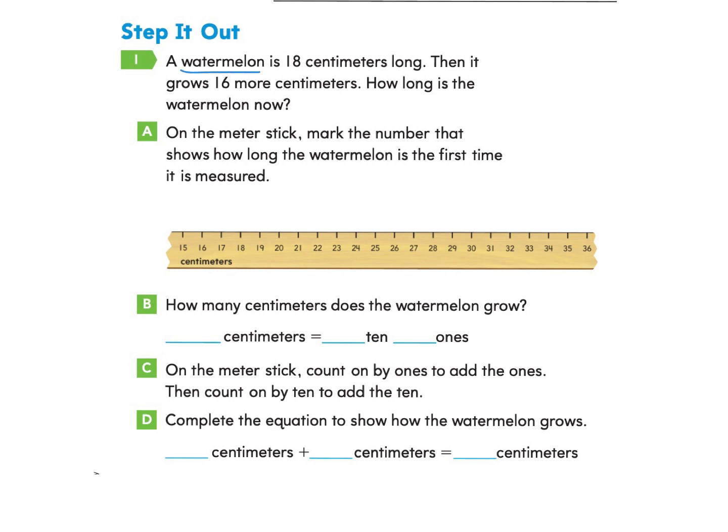A watermelon is 18 centimeters long. Then it grows or gets bigger 16 more centimeters. How long is the watermelon now? Part A asks us, on a meter stick, mark the number that shows how long the watermelon is the first time it is measured. So if we go back to our word problem, the first measurement of the watermelon was that it was 18 centimeters long.